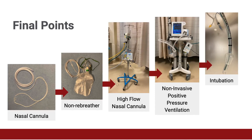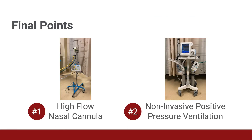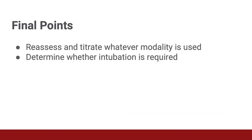Respiratory support can be seen as an escalating ladder with several options before intubation. Both high flow nasal cannula and non-invasive positive pressure ventilation are options for patients with severe dyspnea prior to intubation. High flow nasal cannula is preferred, with non-invasive positive pressure ventilation as the next best option. Whatever modality is used, reassessment and titration are important, as well as determining whether the patient ultimately requires intubation.